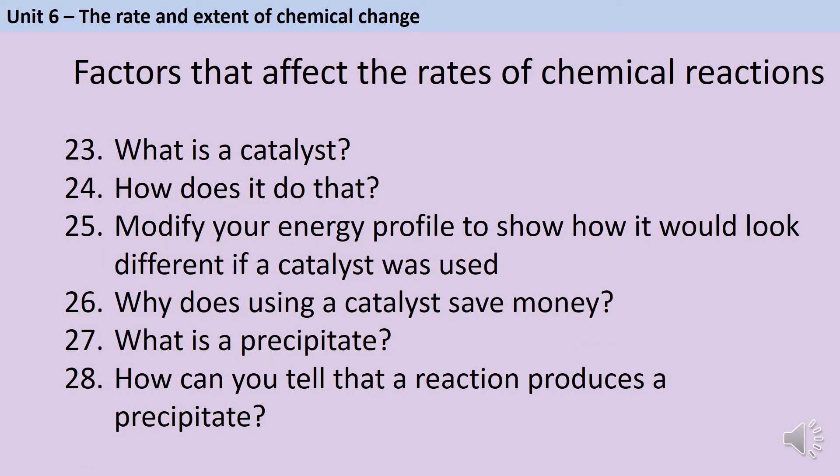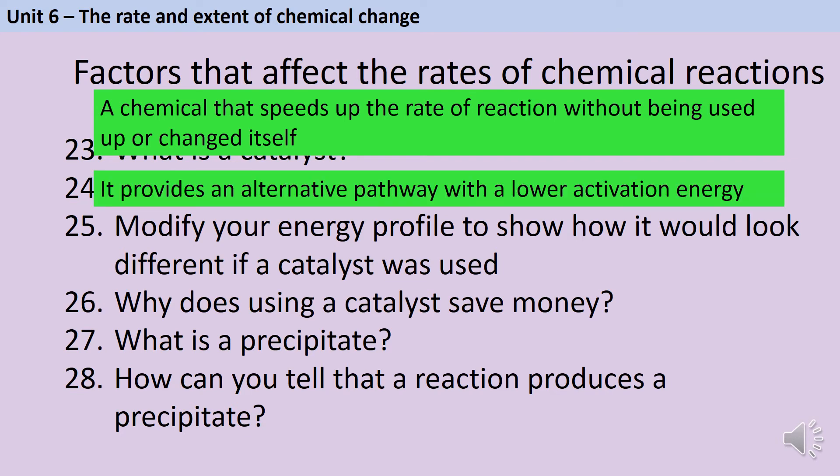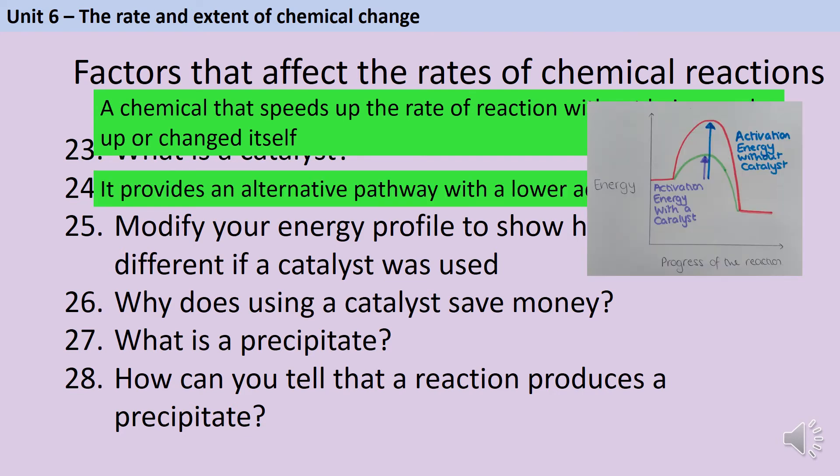A catalyst is a chemical that speeds up the rate of reaction without being used up itself. It does this by providing an alternative reaction pathway that has a lower activation energy, a bit like providing a shortcut which takes less energy to do. We drew this energy profile earlier, and the green line represents what happens with a catalyst. The reaction starts with the same amount of energy and ends with the same amount of energy, but in between the activation energy is lower. So it's more likely that a particle reacting near a catalyst will be able to have a successful collision and therefore be able to react.